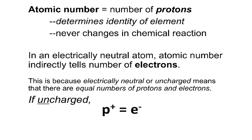The atomic number is the number of protons, and it is the number of protons that determines what element you're looking at. The atomic number — the number of protons — never changes in a chemical reaction. Another way of saying that is that you can't convert one element into a different element using chemistry. To do that, you need a nuclear reaction, not a chemical reaction.